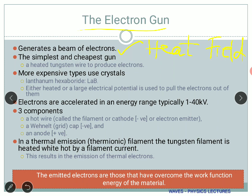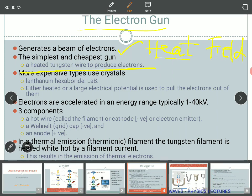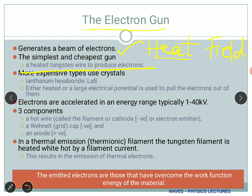The simplest, cheapest and widely used electron source is tungsten wire — we heat the tungsten wire to produce electrons. If you want a better setup, you use a more expensive crystal which is lanthanum hexaboride (LaB6). Lanthanum hexaboride is heated, or we use a large electric potential to pull the electrons out. The electrons are accelerated in an energy range typically of 1 to 40 kilovolts.